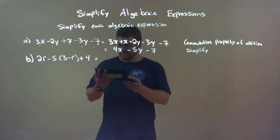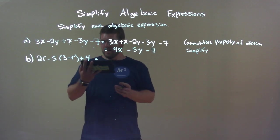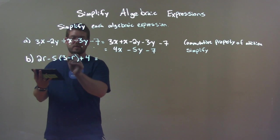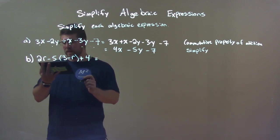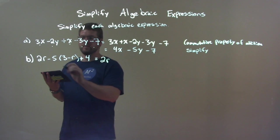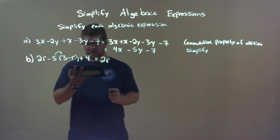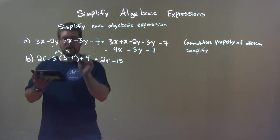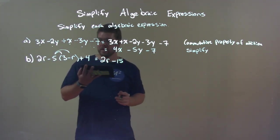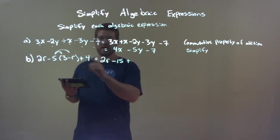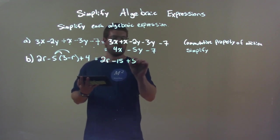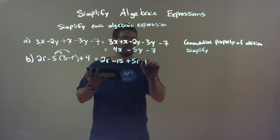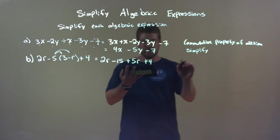All right. So now let's go. Well first, my first step is I'm going to actually distribute this 5 into the 3 and the r. Okay? So everything comes over. The 2r, which is written first. Now we have a minus 5 times a 3, which is a minus 15. And minus 5 times minus r is a positive, right? 2 negatives is a positive, positive 5r. And then we just have the plus 4. There we use the distributive property.